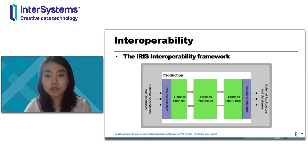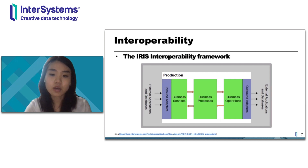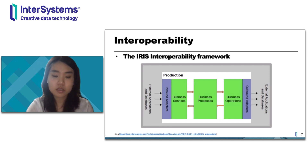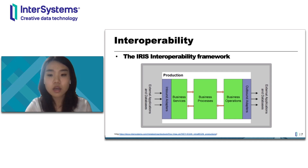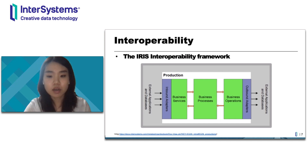If we compare this framework with a Kafka system, we can easily notice that the business service is very similar to the Kafka consumer in that it receives messages from external systems, and that the business operation is very similar to the Kafka producer in that it sends messages to external systems. So we will have a business service acting as the Kafka consumer and the business operation acting as the Kafka producer.